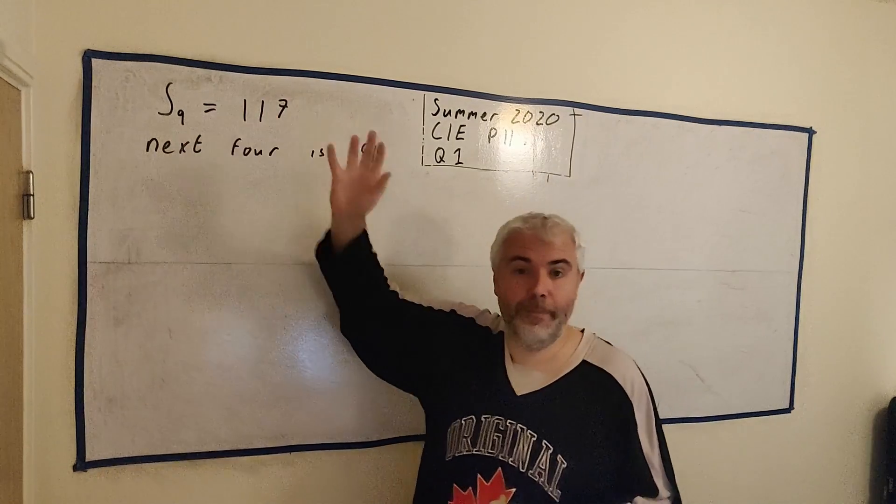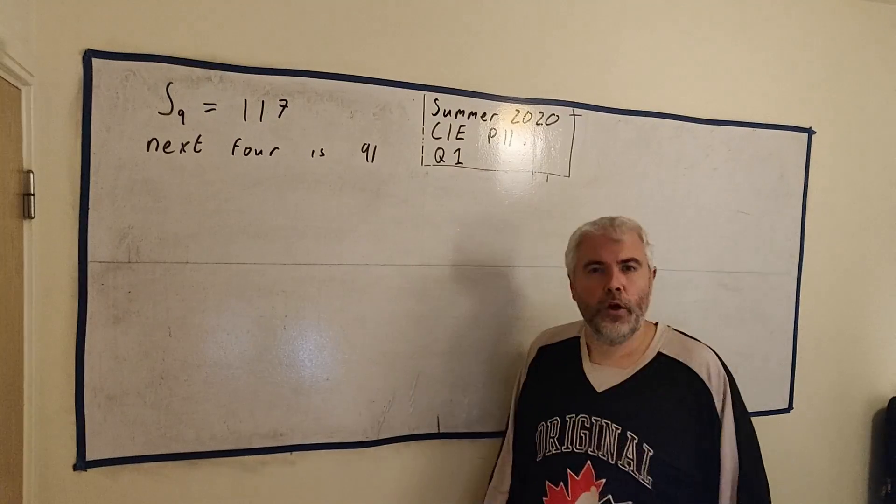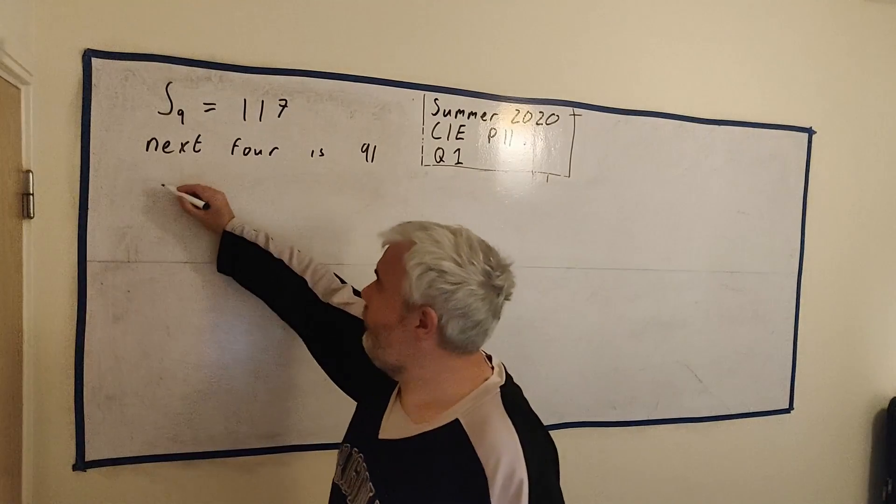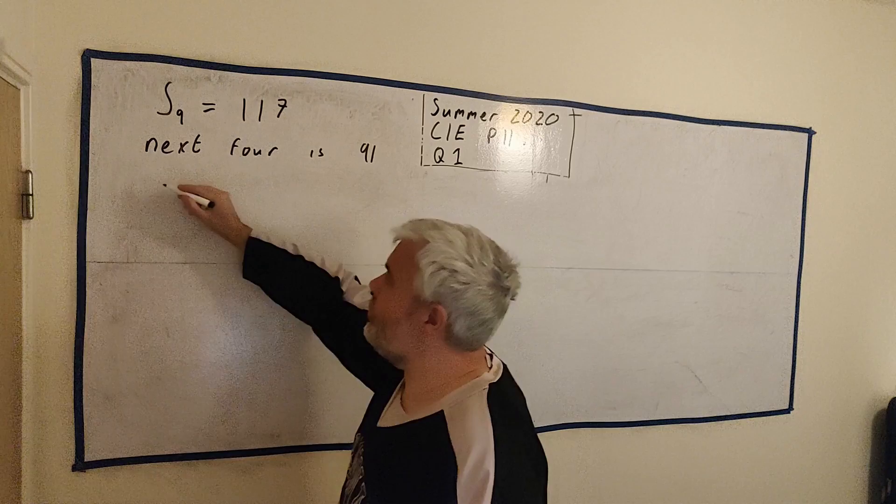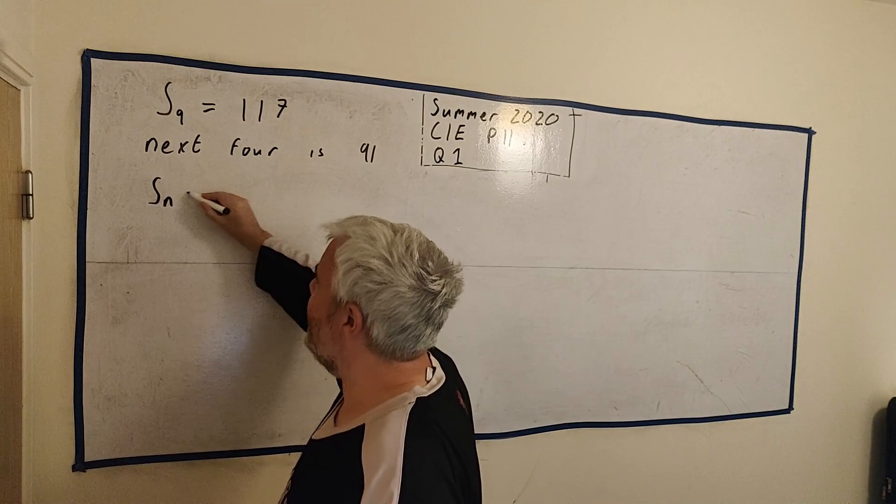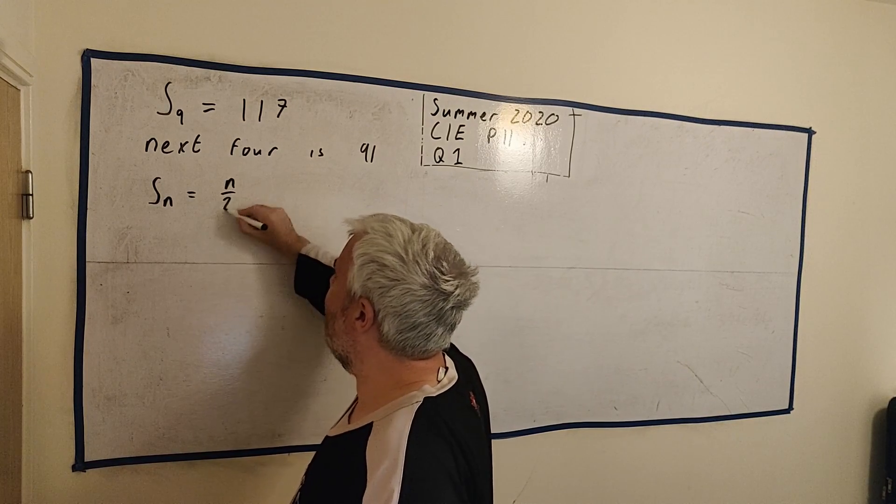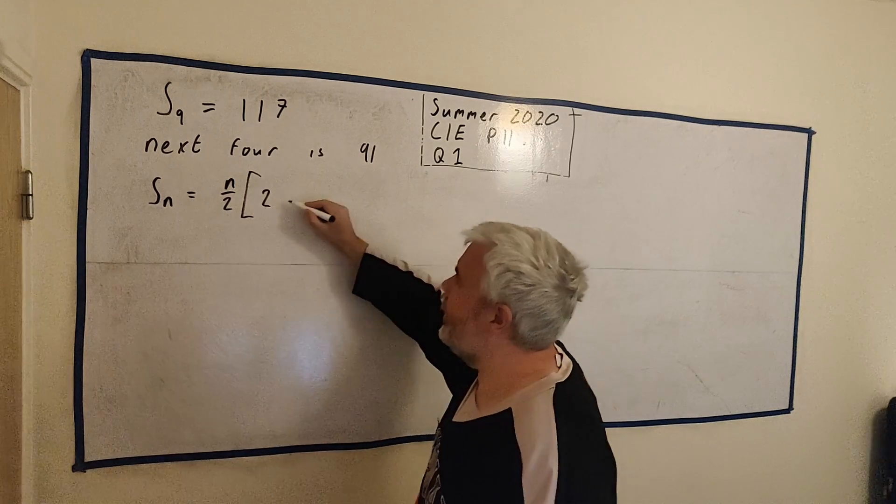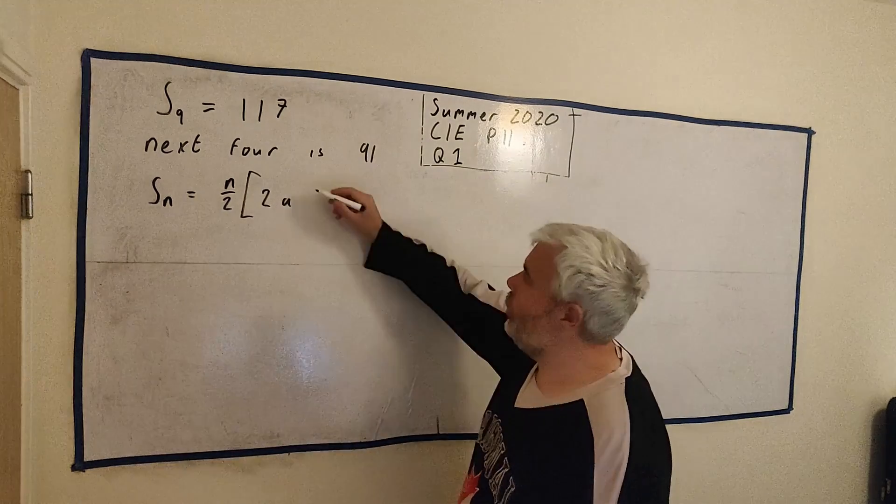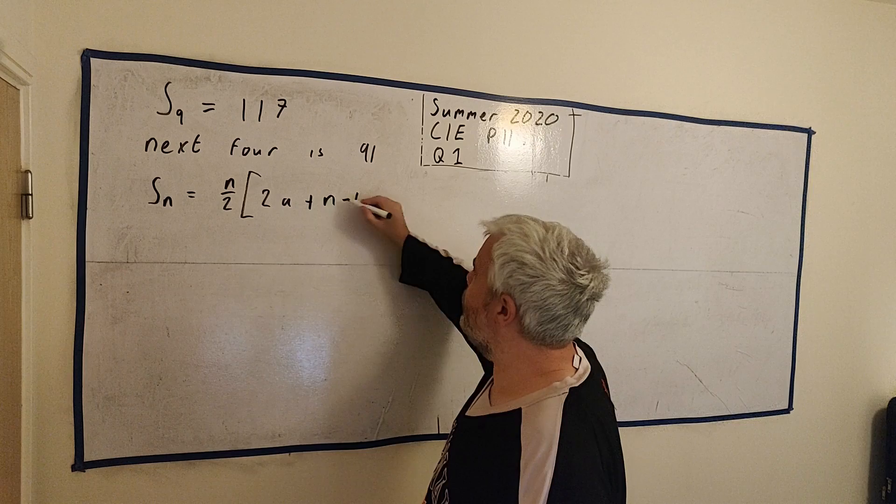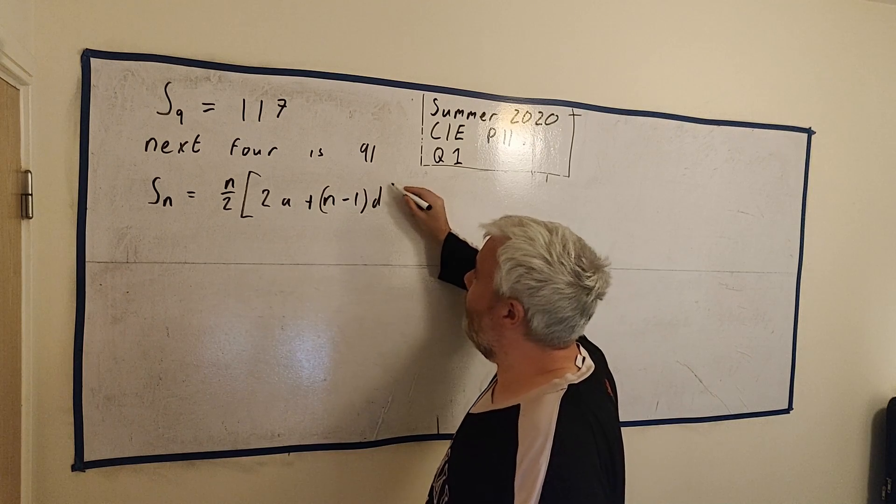We need a way to turn this into maths, but we have that. We're going to use the formula for arithmetic progressions, the sum of arithmetic progressions. Sₙ is equal to n divided by 2 multiplied by 2 times a plus n minus 1 multiplied by d.